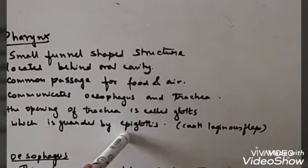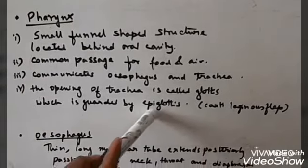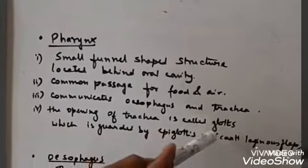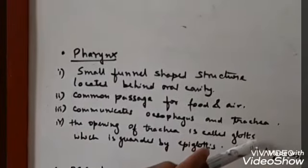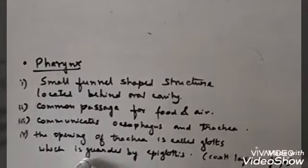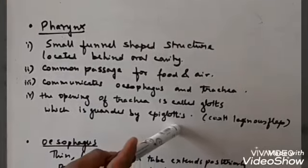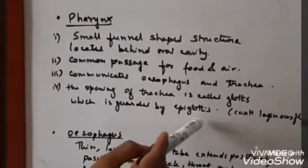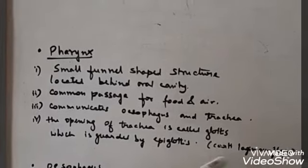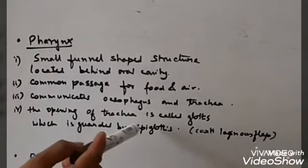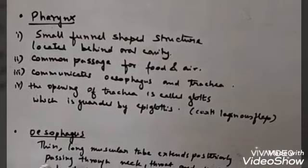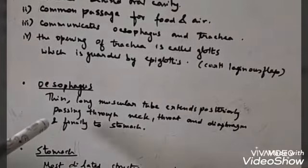The pharynx is a communicating junction between the trachea and esophagus. The opening of the trachea is called the glottis. The glottis is guarded by a cartilaginous flat-like structure called the epiglottis. Normally the glottis is open, but during swallowing of food it gets covered by the epiglottis to prevent the entry of food into the windpipe or trachea.